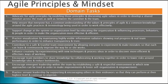Fifth, we need to contribute to a safe and trustful team environment by allowing everyone to experiment and make mistakes so each person can learn and continuously improve their work. Sixth, we need to enhance creativity by experimenting with new techniques and process ideas to discover more efficient and effective ways of working. Seventh, we encourage team members to share knowledge by collaborating and working together to lower risks around knowledge silos and reduce bottlenecks. Eighth, we encourage emergent leadership by establishing a safe and respectful environment where new approaches can be tried to foster self-organization and empowerment.